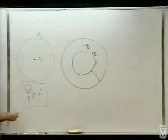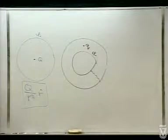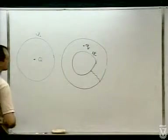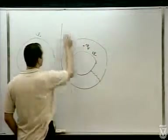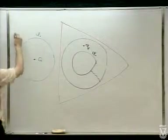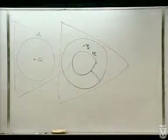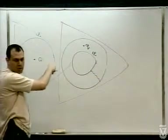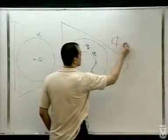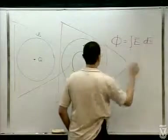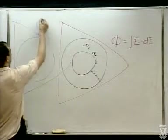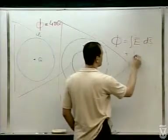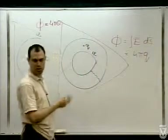כבר אתם יודעים שהשדה בחוץ חייב להיראות כמו Q/R² רדיאלי. כדי להראות ש-Q גדול שווה Q קטן: לוקחים מעטפת גאוס מכוערת כלשהי. מאחר והשדה בחוץ זהה בשתי הבעיות, השטף על אותה מעטפת שווה. חוק גאוס: השטף פה הוא 4πQ גדול, ופה הוא 4πQ קטן — ולכן Q גדול = Q קטן.